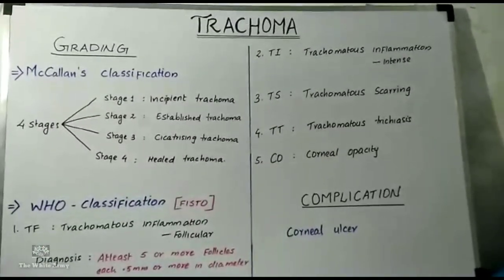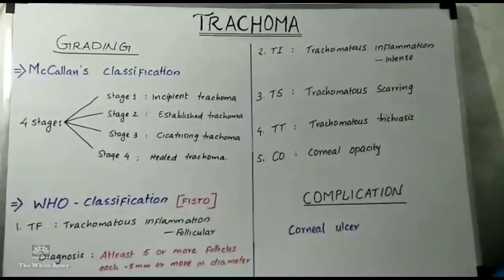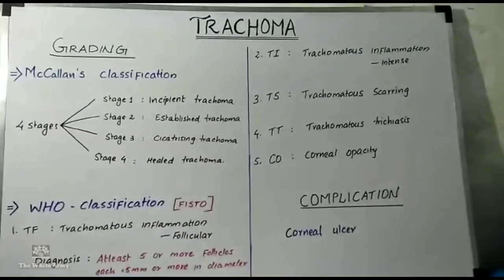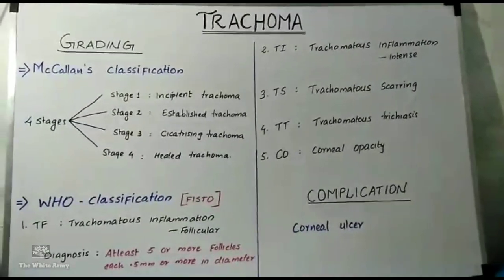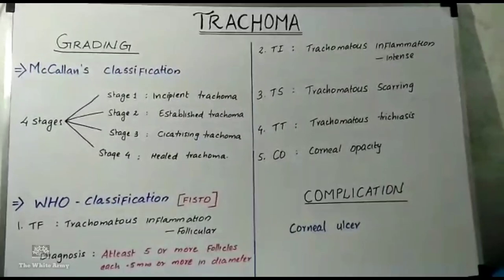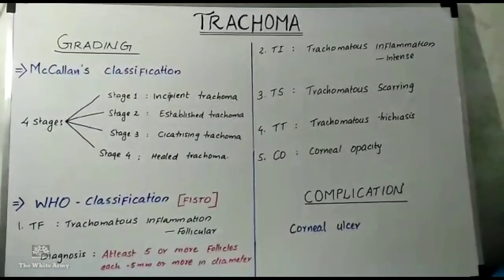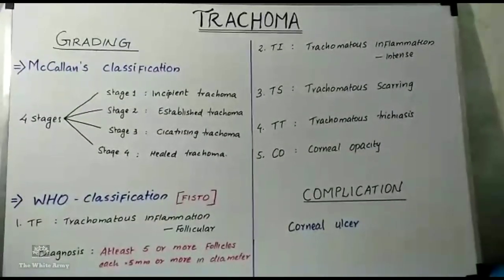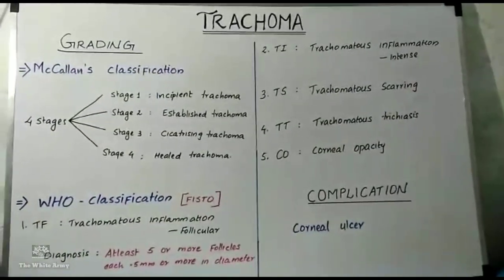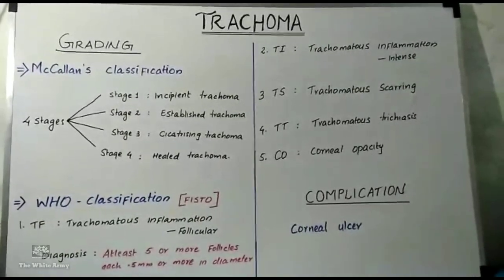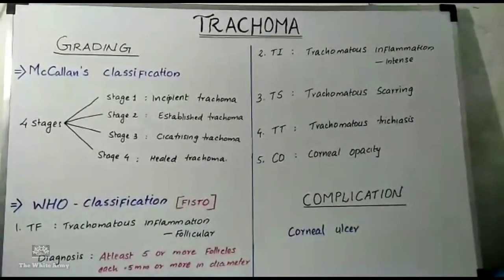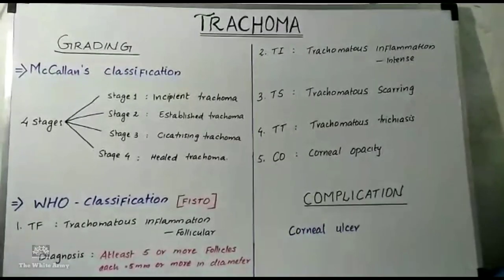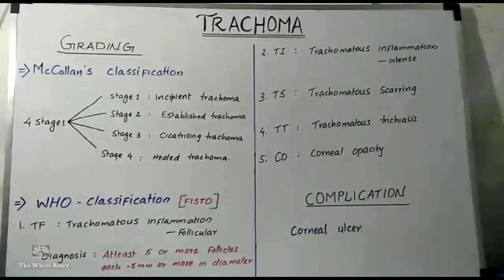According to MacCallan's classification, trachoma is divided into four stages. Stage 1 is incipient trachoma, characterized by hyperemia of the conjunctiva and immature follicles. Stage 2 is established trachoma, having mature follicles, papillae, and a progressive corneal pannus. Stage 3 is cicatrizing trachoma, having an obvious scar. Stage 4 is healed trachoma or the stage of sequelae, where the disease is quiet and cured, but sequelae due to cicatrization may give rise to symptoms.